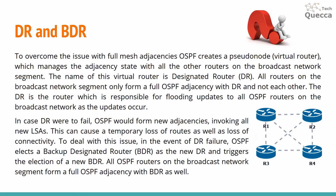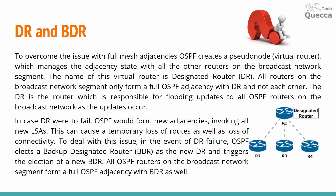To overcome the issue with full mesh adjacencies, OSPF creates a pseudo node or virtual router which manages the adjacency state with all other routers on the broadcast network segment. The name of this virtual router is the Designated Router, or DR. All routers on that broadcast network segment only form a full OSPF adjacency with the DR and not with each other. The DR is responsible for flooding updates to all OSPF routers on the broadcast network as updates occur.